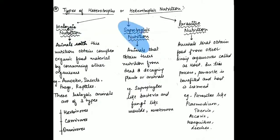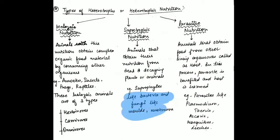In saprophytic nutrition, animals obtain their nutrition from dead and decaying plants and animals. They don't kill the animal; instead, an organism already dead by any means has its dead and decaying matter left on the ground, and saprophytic organisms feed upon that matter. These organisms are called saprophytes — examples include bacteria, fungi, mold, and mushrooms.